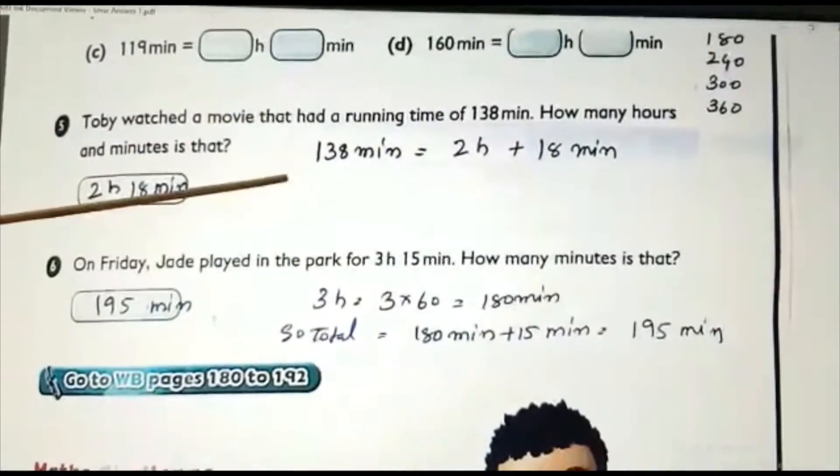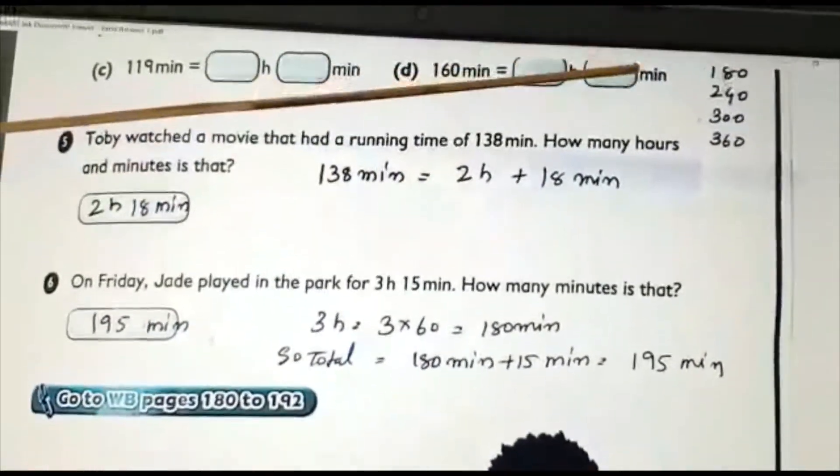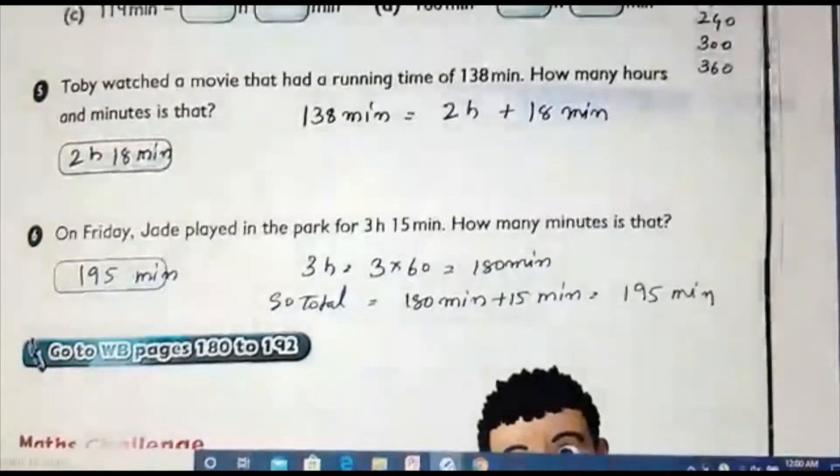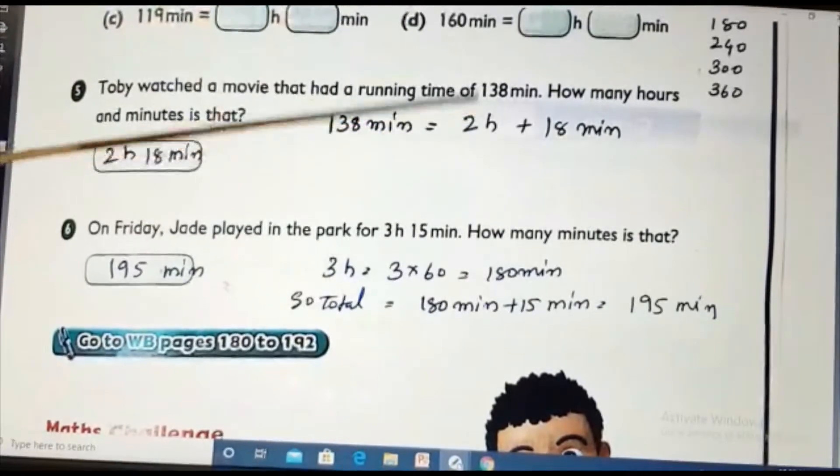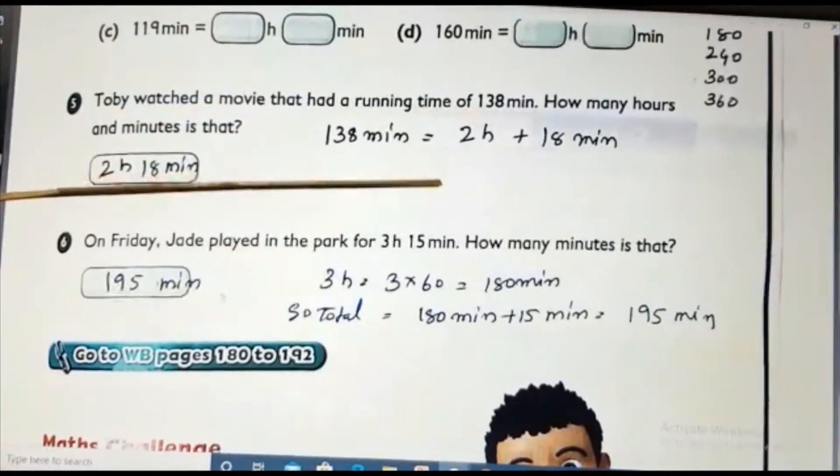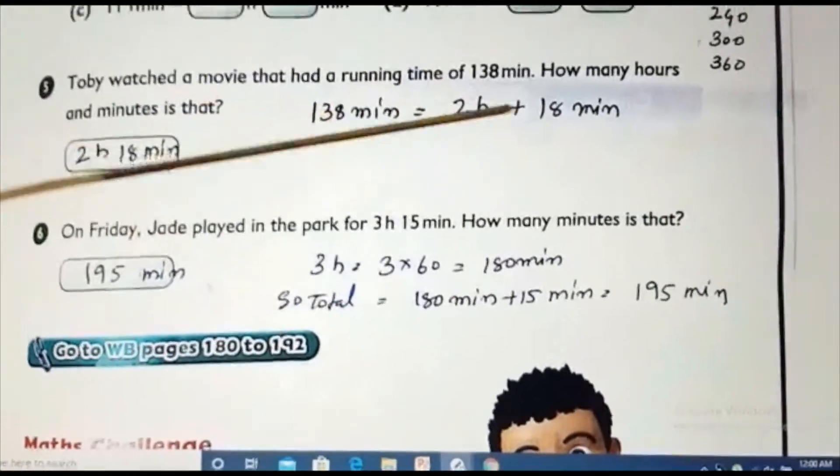Then, Toby's. Look. 138. 138 minute means? I know. 138 means where it will come. After 120, next is 180. So, we know 60, 120, 180. So, 3 hours, 180. We have only 138. So, I go back. So, 2 hours, 120. So, 120. Then, how many minutes left? 18 minutes. So, it is 2 hours, 18 minutes.